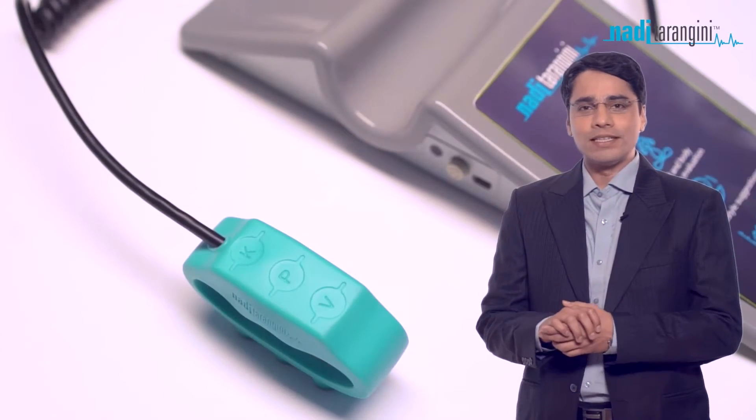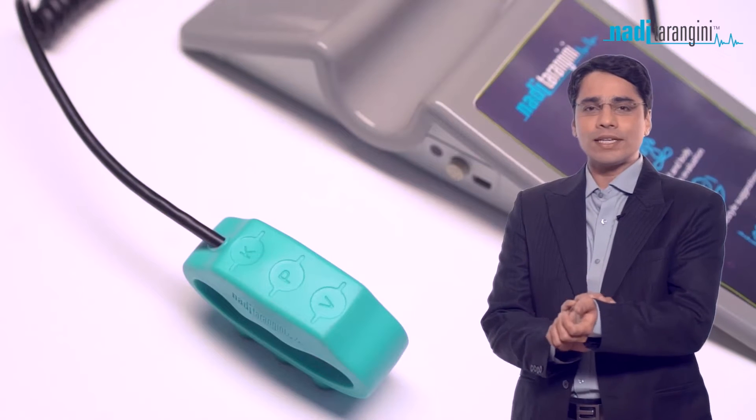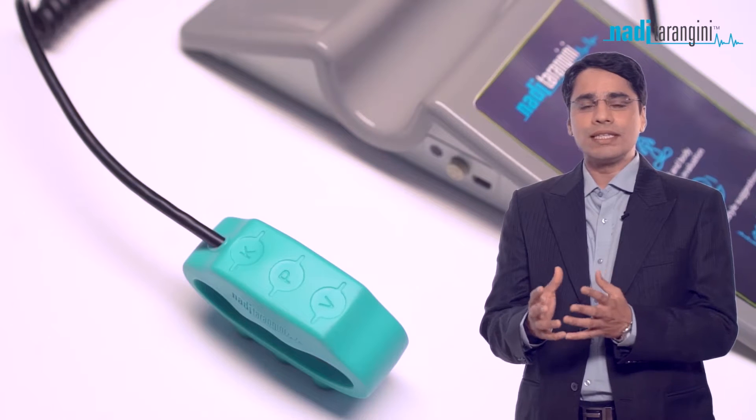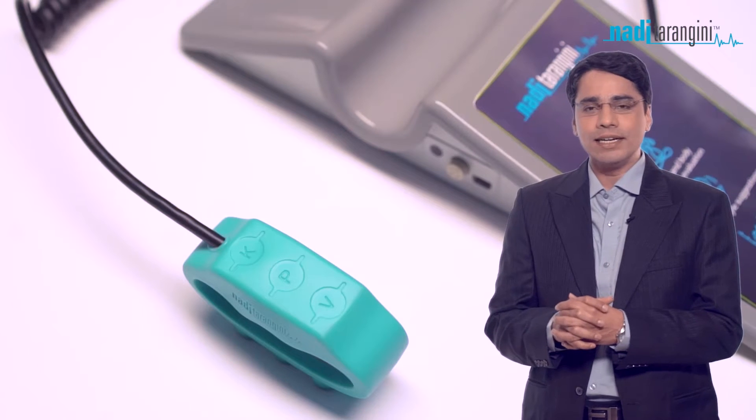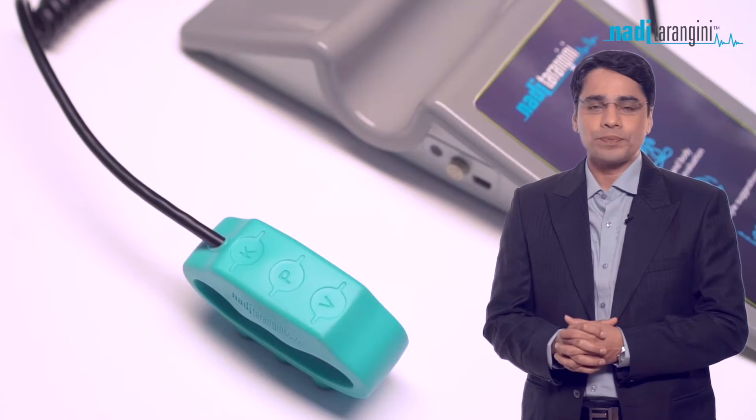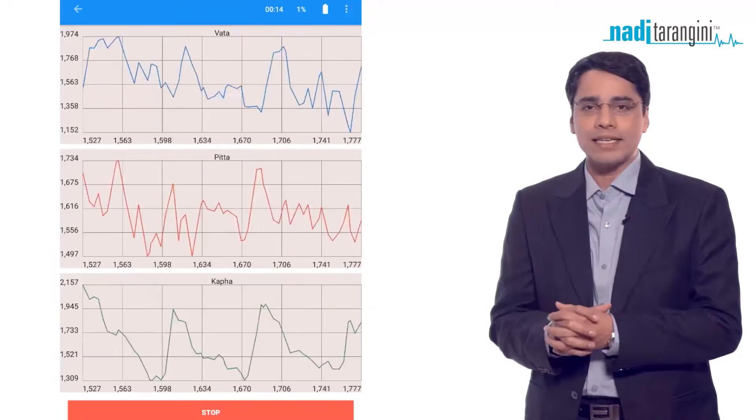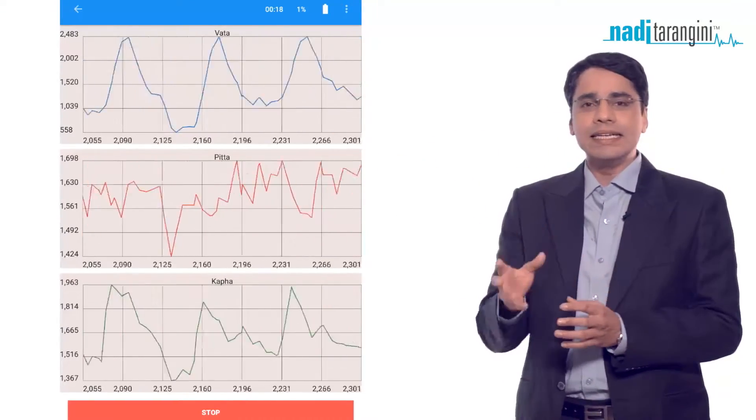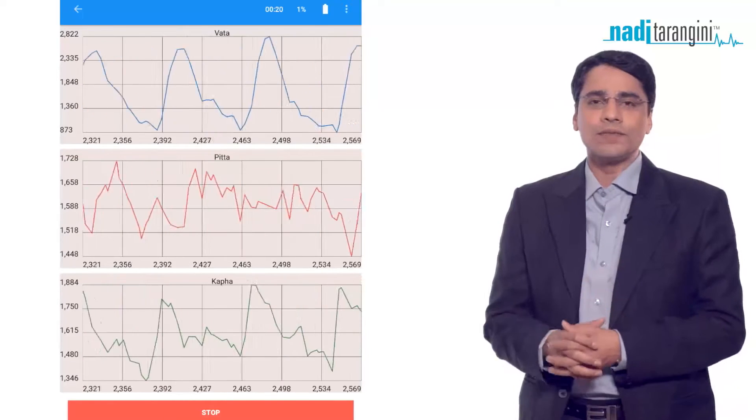The feeling information of the pulse is available at three locations as Vata, Pitta, and Kapha. We use three pressure sensors in Nadi Tarangini to convert that pressure energy into digital form. Finally, we see three signals on the computer screen or mobile screen as three waveforms, similar to a 12-lead ECG signal.